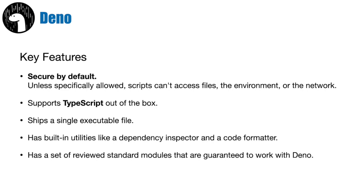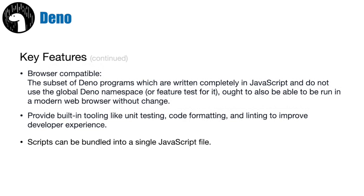Dino ships as a single executable file, so you don't have to download a whole bunch of additional libraries or dependencies to get Dino to run — download and install is very simple. Dino also has a lot of built-in utilities like a dependency inspector and a code formatter, and a set of reviewed standard modules guaranteed to work with Dino. It has excellent browser compatibility and provides built-in tooling like unit testing, code formatting, and linting to improve the developer experience. Scripts can also be bundled into a single JavaScript file.